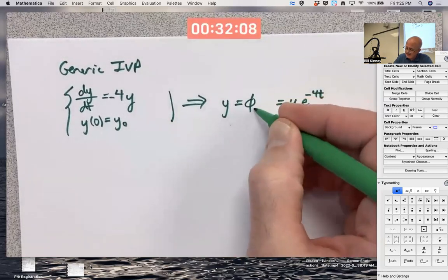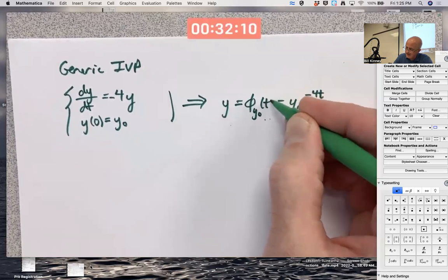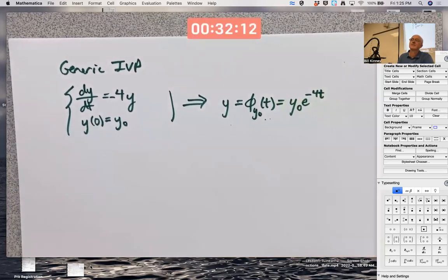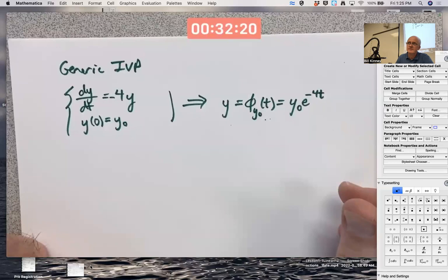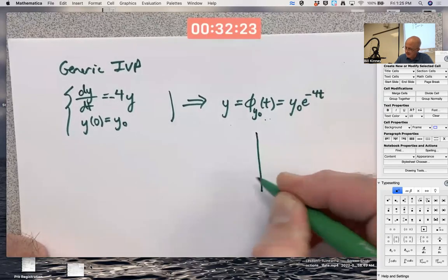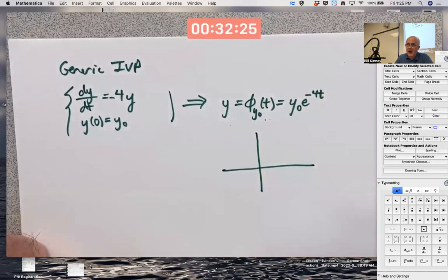What we're used to doing here when we think about this is thinking of this as a function of t. And we can graph it. It's going to be an exponential decay graph.